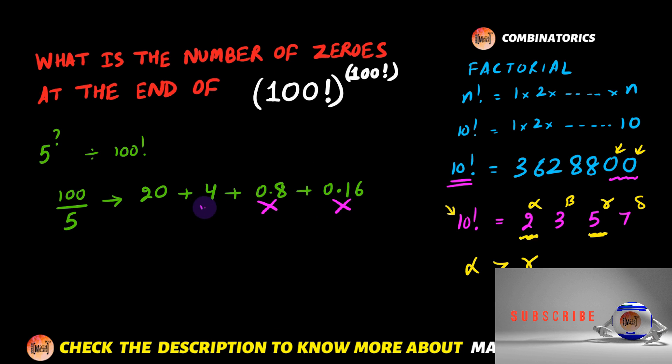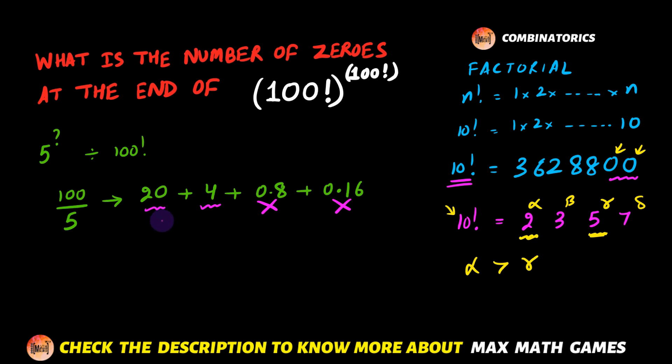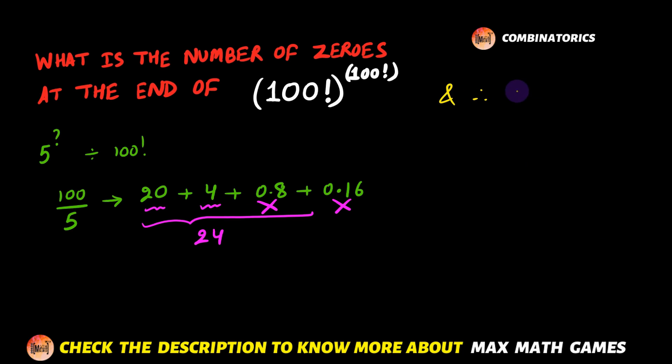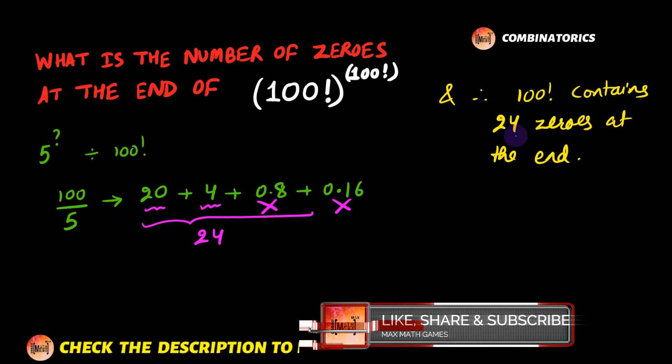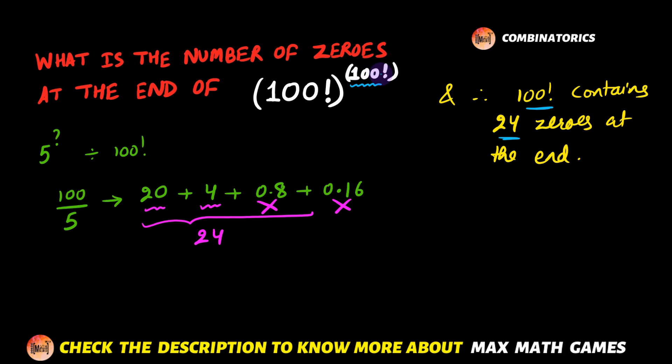And the answer will be equal to 24. And therefore 100 factorial contains 24 zeros at the end. Now we don't even need to calculate the highest power of 2 that will divide 100! because that is obviously going to be more than 24. So now that we know that 100! contains 24 zeros, the problem is what do we do with the 100! in the power?